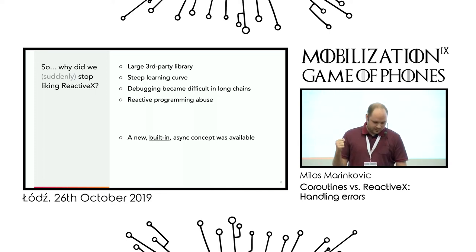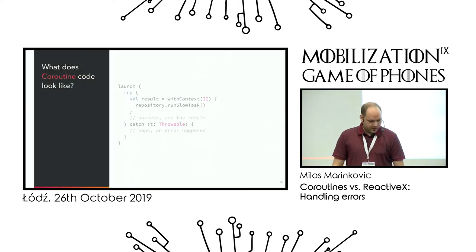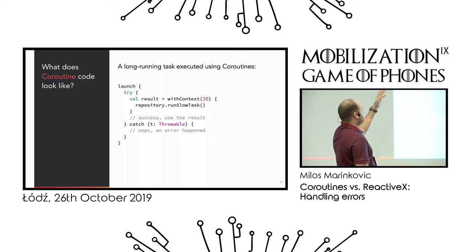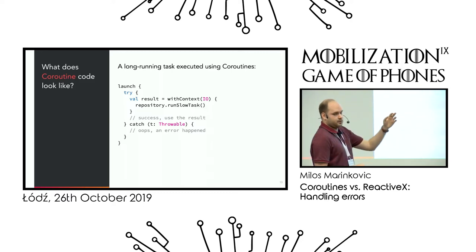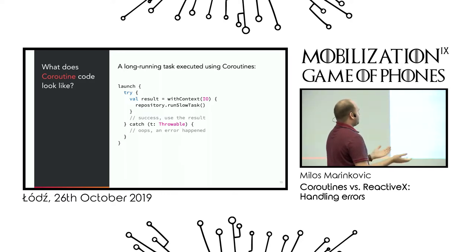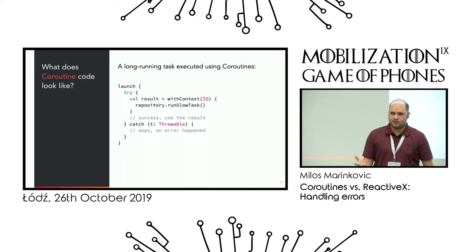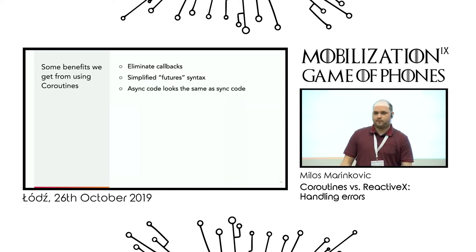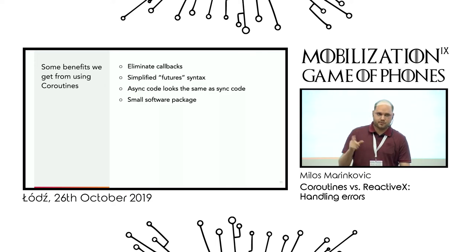So what we now have is a new built-in concept: coroutines. This is what the code with coroutines would look like. You would launch, for example, with the launch function. Inside of there you would fetch some result, maybe on another thread. Then you would have success — not as a callback, but just like the next line of code. You would do a try-catch, available in both Java and Kotlin, and just catch the exception and continue. It looks simpler. You don't have to learn much. Some of the benefits: we eliminated callbacks, we have simplified future syntax with async-await, async code that looks like synchronous code, and it's a much smaller software package than Rx.